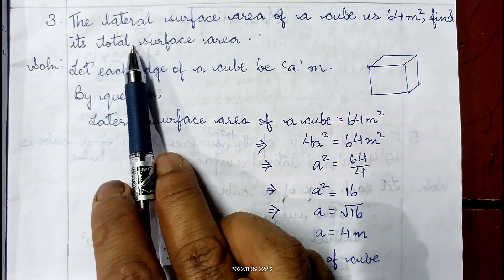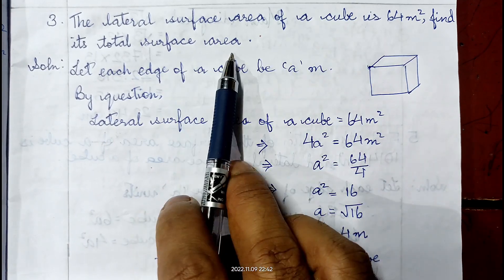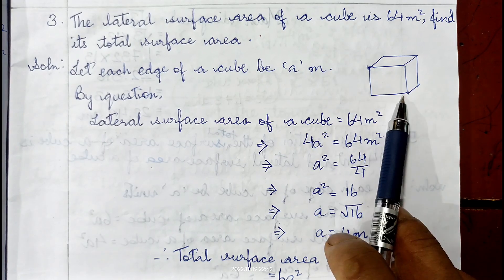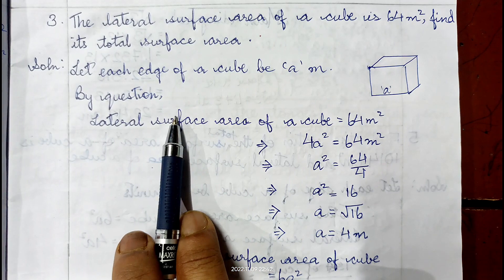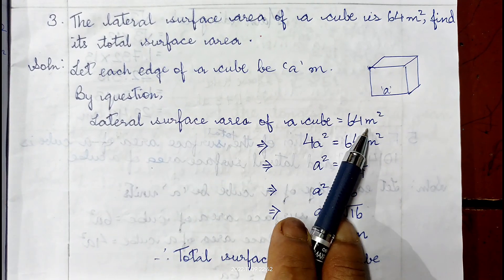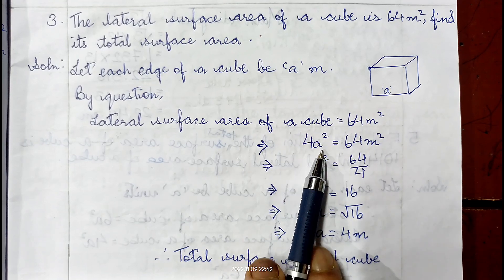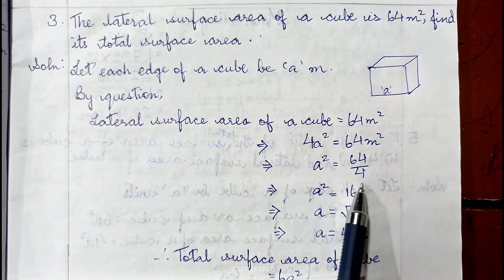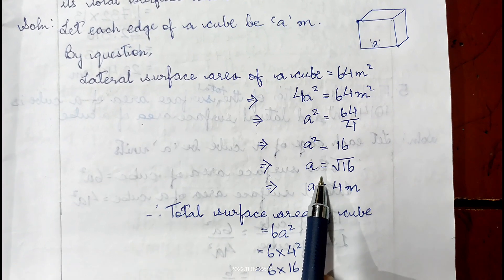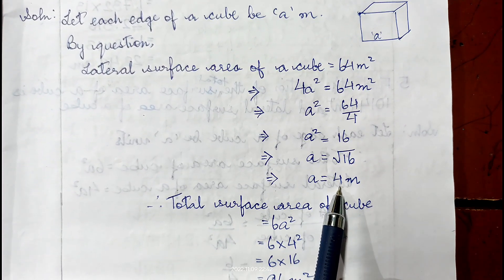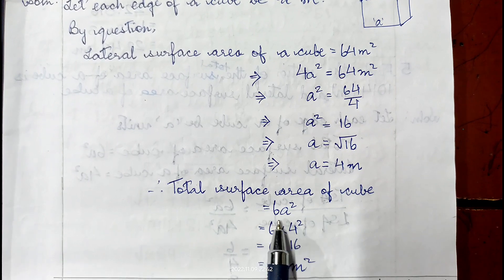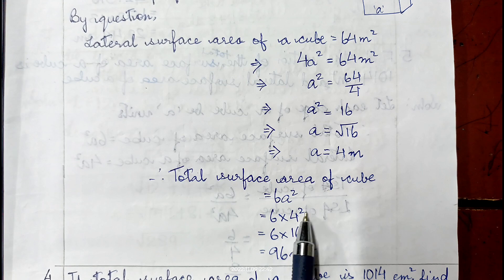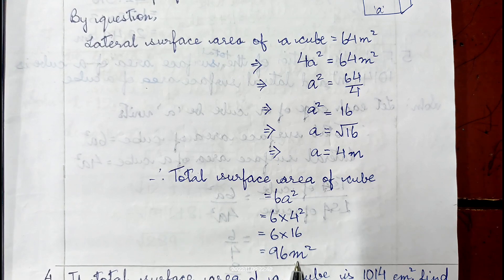Question 3: The lateral surface area of a cube is 64 m². Find the total surface area. Let each edge be A meters. Lateral surface area = 4A² = 64, so A² = 16, giving A = 4 meters. Total surface area = 6A² = 6 × 16 = 96 m². Therefore the total surface area of the cube is 96 m².